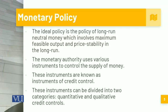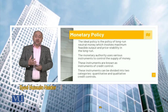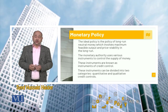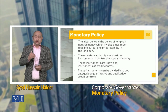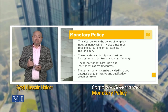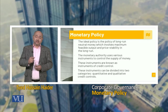The ideal policy is the policy of long-run neutral money, which involves maximum feasible output and price stability in the long run. The monetary authority uses various instruments to control the supply of money. The State Bank, through the banks, tends to control the outflow of money so as not to have an inflationary trend, and through the control of money it tries to promote savings. When the interest rate index points go up, people tend to deposit more money, thereby minimizing cash flow.